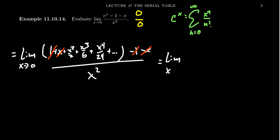you end up with the limit as x approaches 0 of x squared over 2 plus x cubed over 6 plus x to the 4th over 24. We get x to the 5th over 120. Continue on. This all sits above x squared.